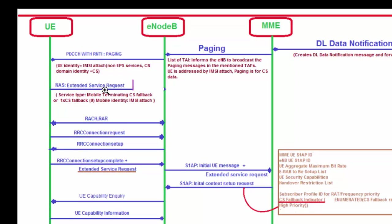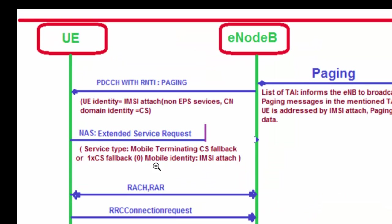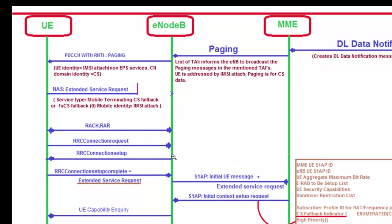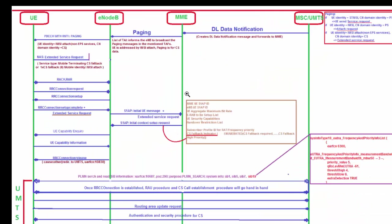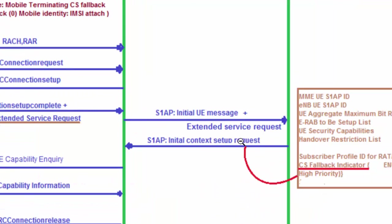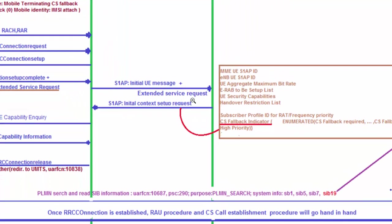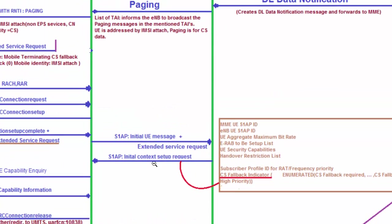The Extended Service Request message is sent to the MME. Since the UE is in idle mode, to send this message the UE first attaches to the LTE network by sending RACH, receiving RAR, sending RRC Connection Request, receiving RRC Connection Setup, and then sending RRC Connection Setup Complete along with the Extended Service Request message to the eNodeB. The eNodeB forwards the Extended Service Request message to the MME via the Initial UE Message. The MME reads the service type — mobile terminating CS Fallback.